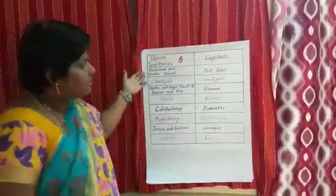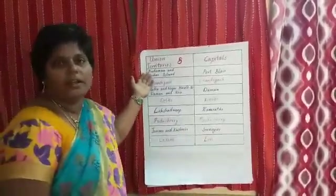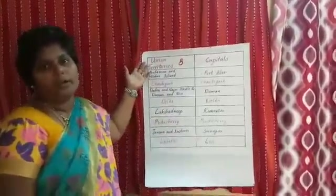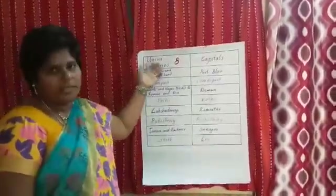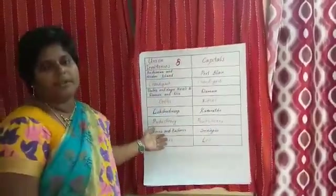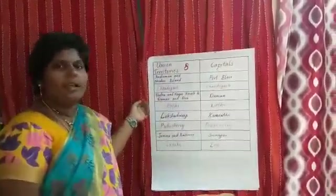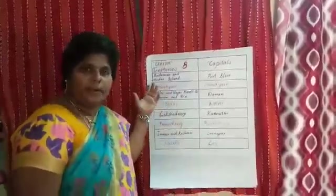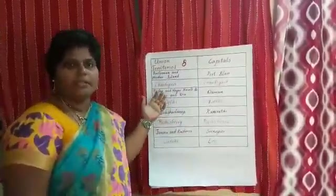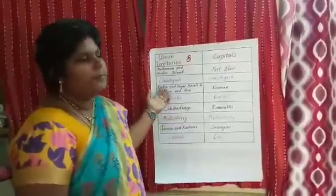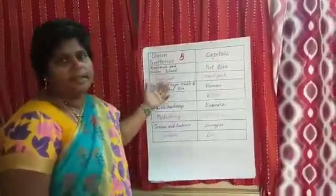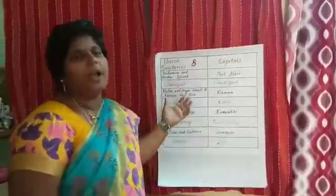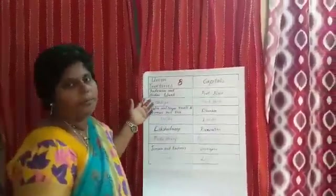Union territories are the cities ruled under the control of our central government — the central government rules directly. They also have separate capitals and separate CMs, like our states. Every state also has a separate government and separate capitals, with a CM and ministers — all under the control of the CM, who works under the control of our President.